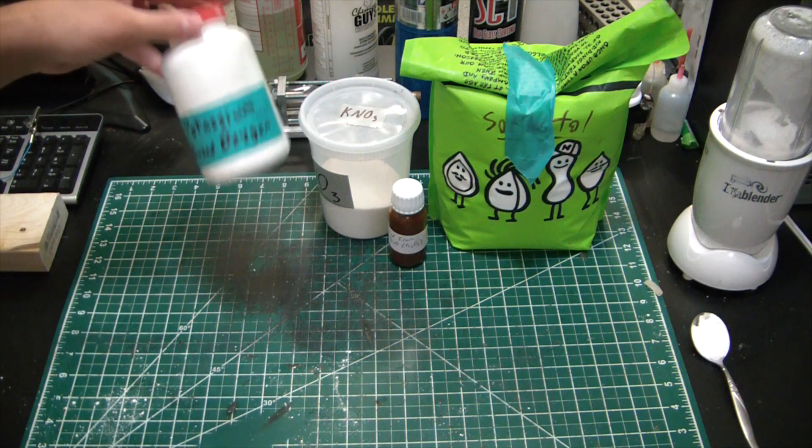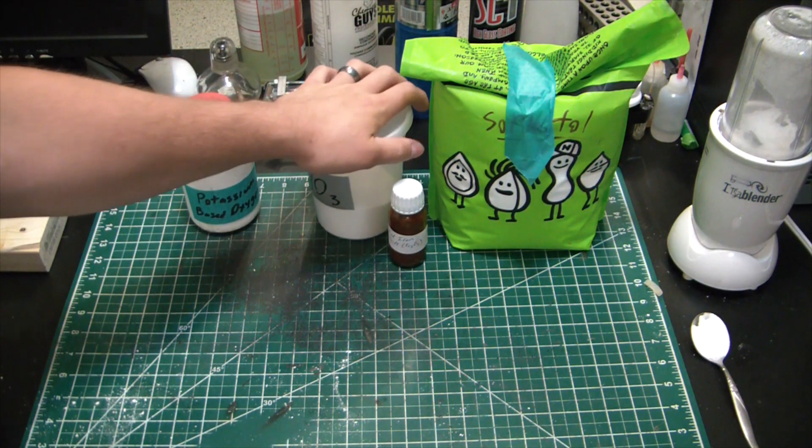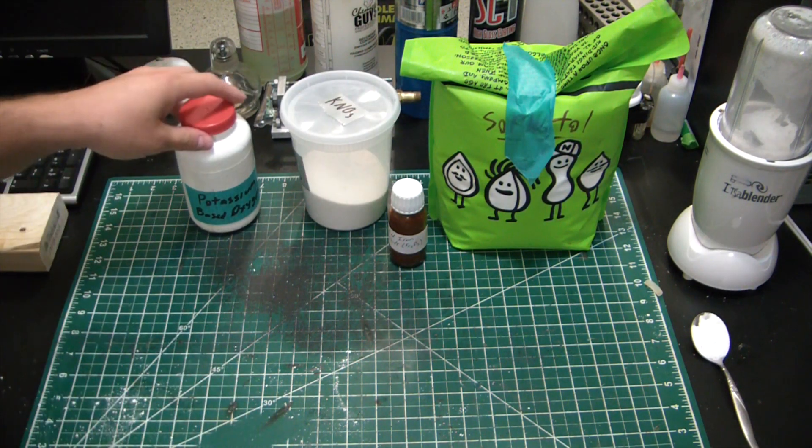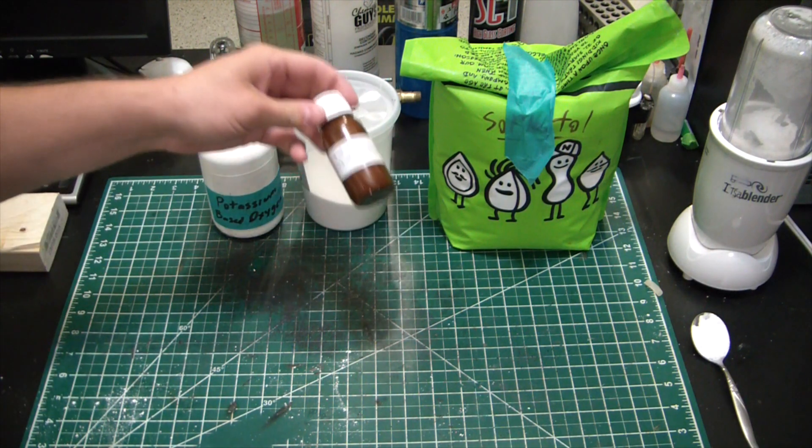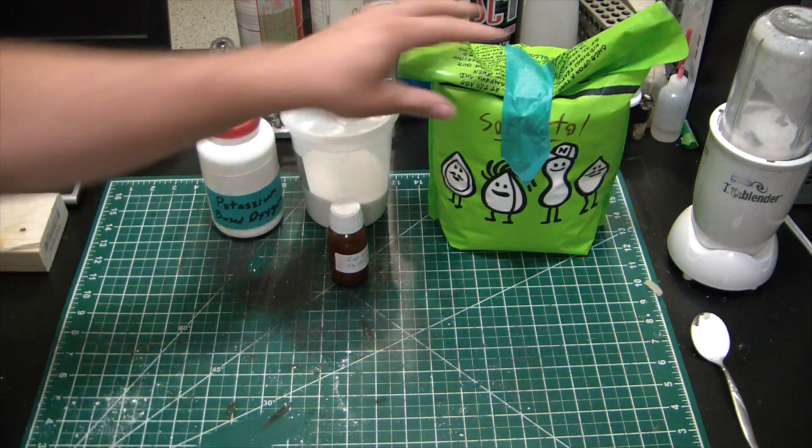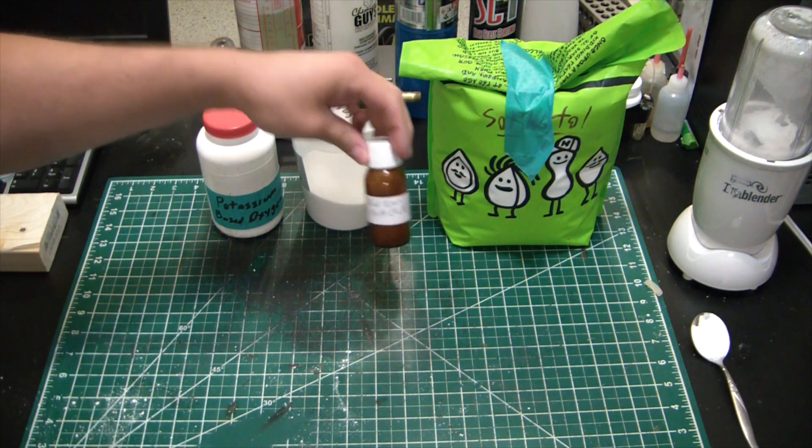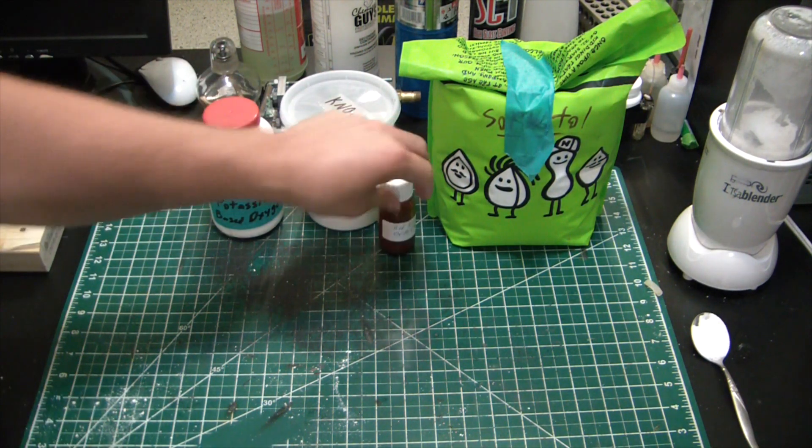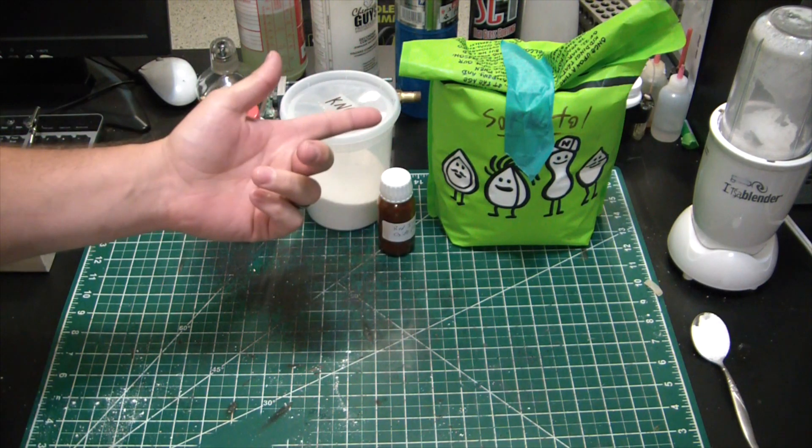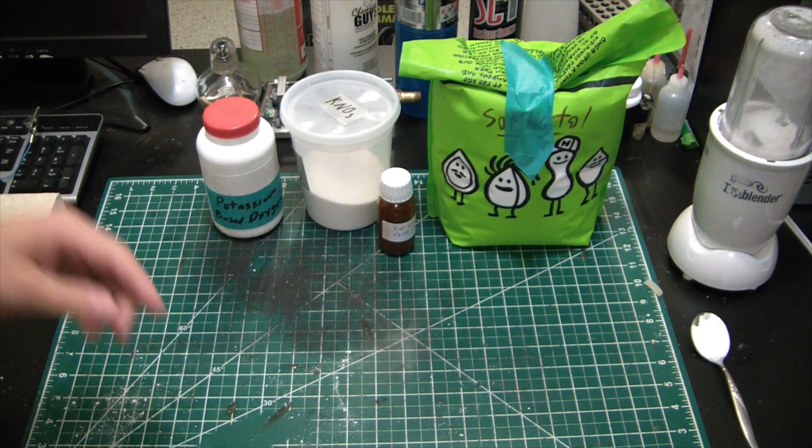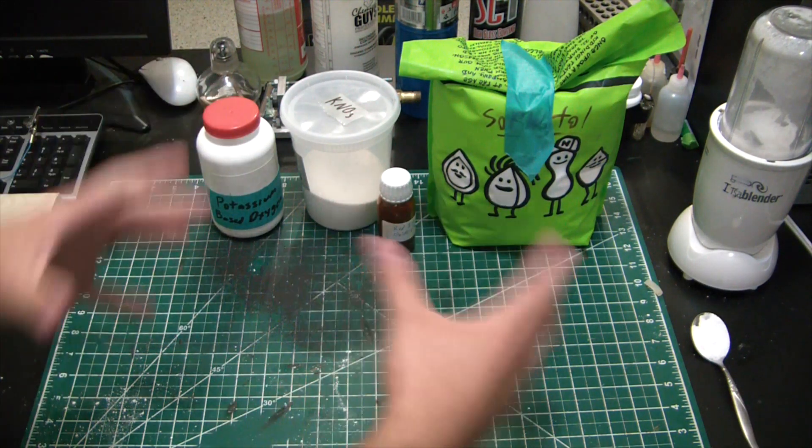We've got our potassium based oxidizer, red iron oxide, and sorbitol. Sorbitol is a pretty powerful laxative, and what this propellant does is basically we melt the sorbitol and mix in the potassium based oxidizer and red iron oxide.